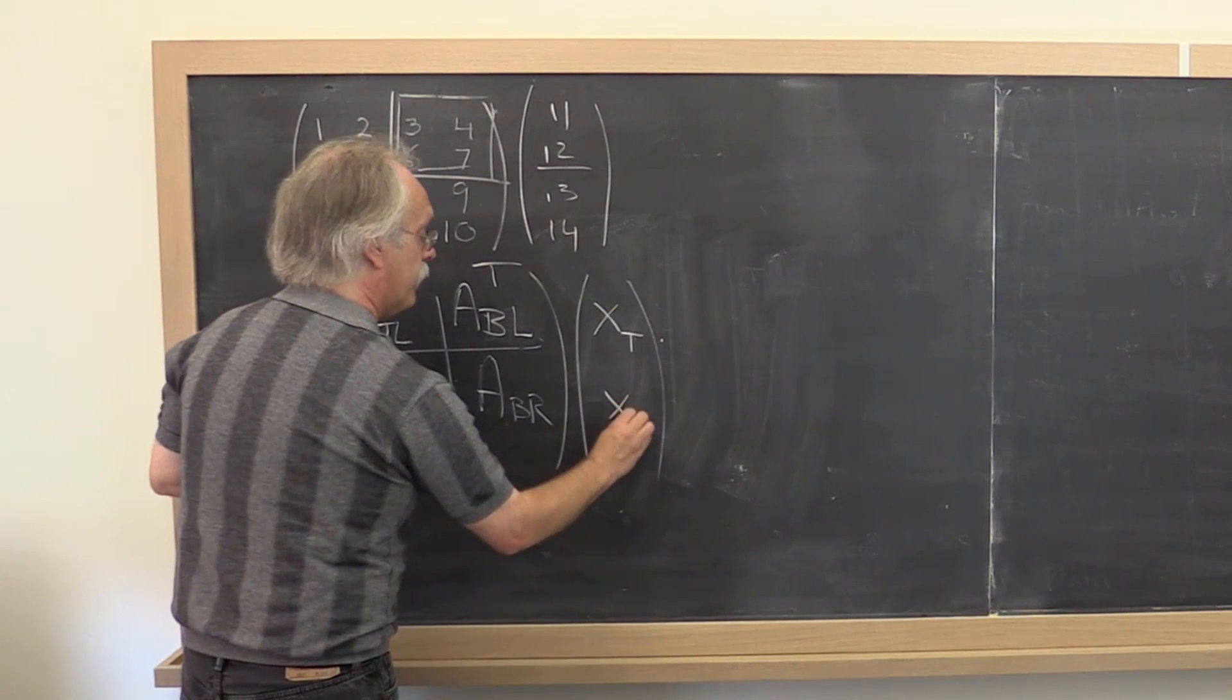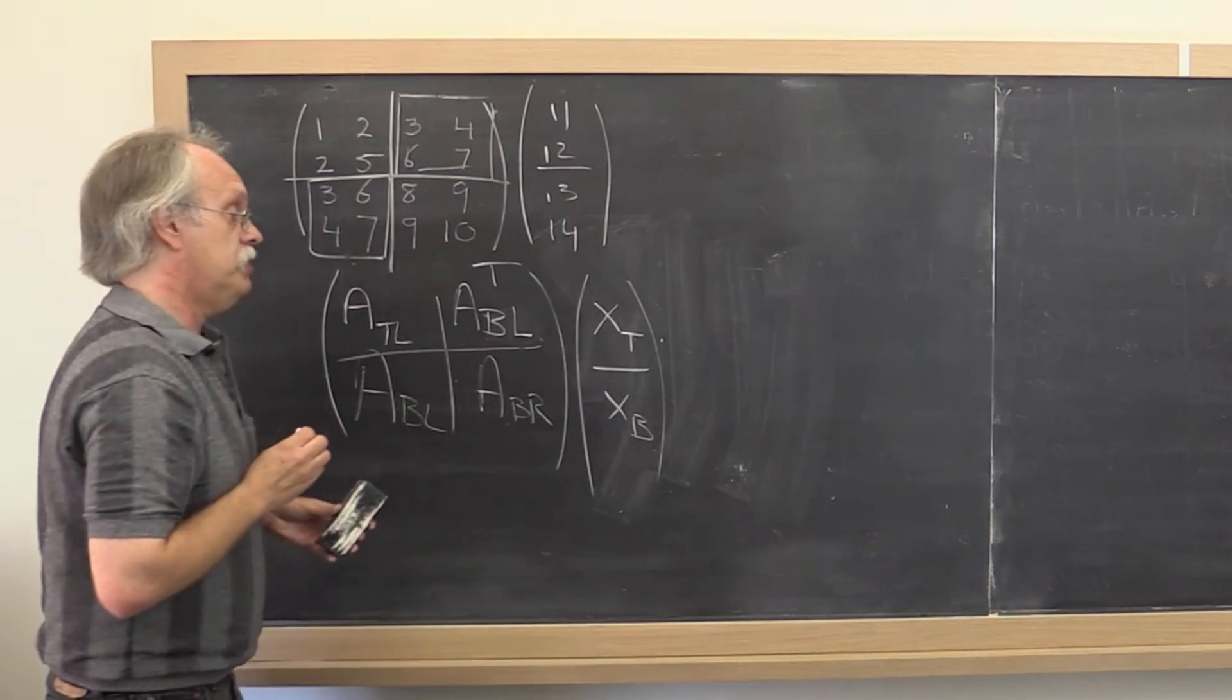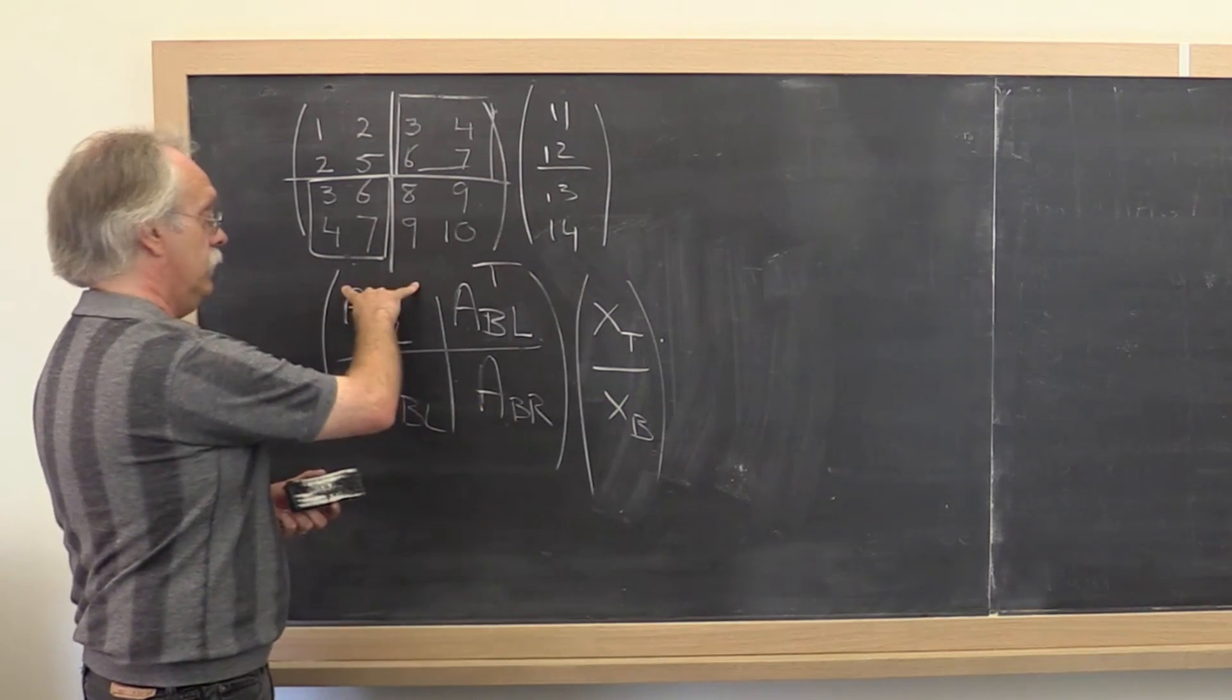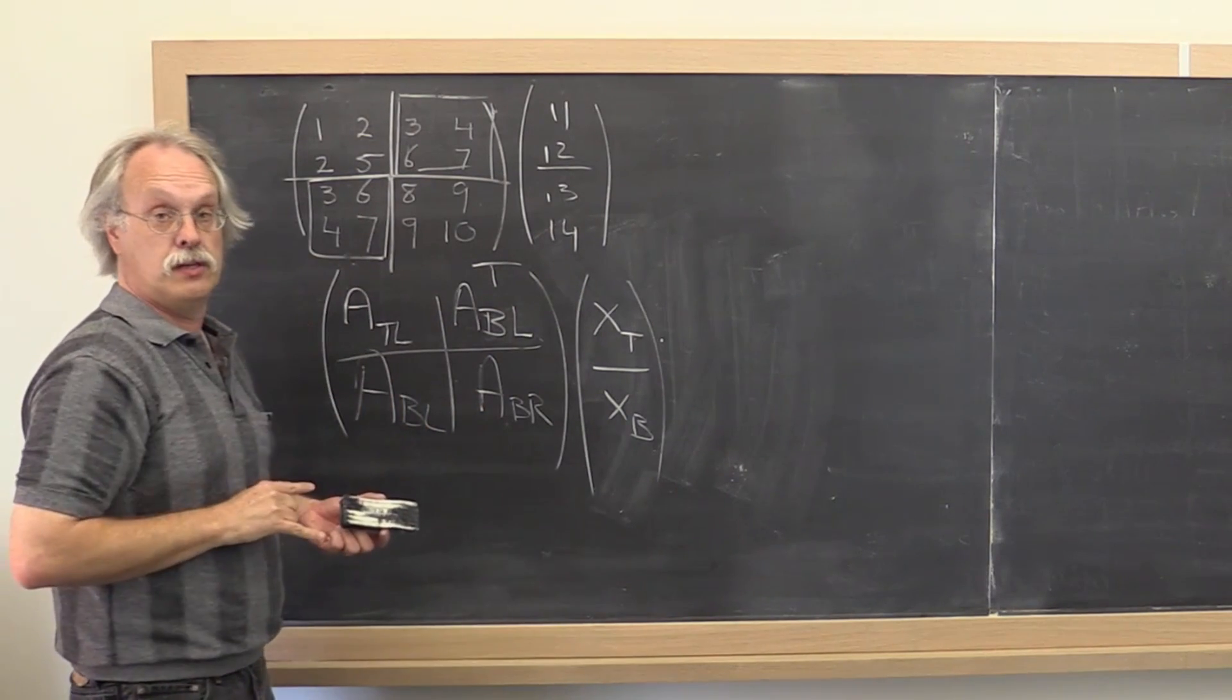So if we then multiply with a symmetric matrix where we only store the lower triangular part, then we can think of taking the vector that we multiply and partitioning it into a top part and a bottom part where the number of elements here is the same as the number of columns here.